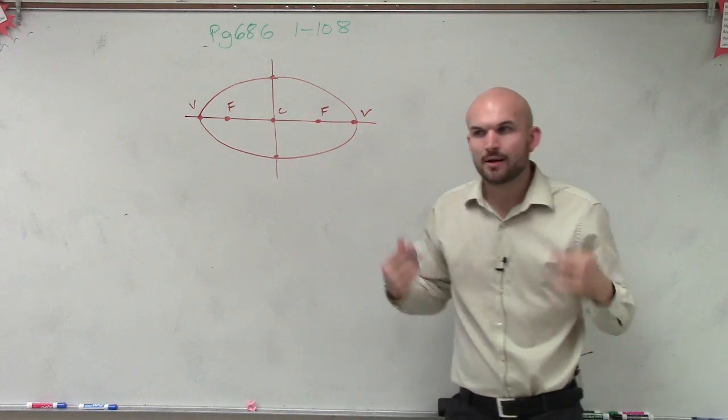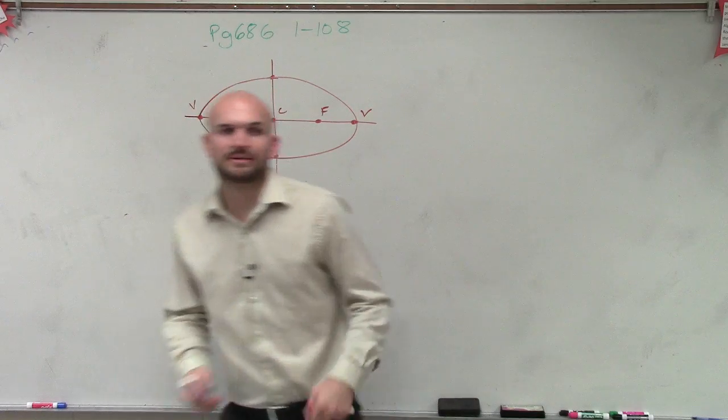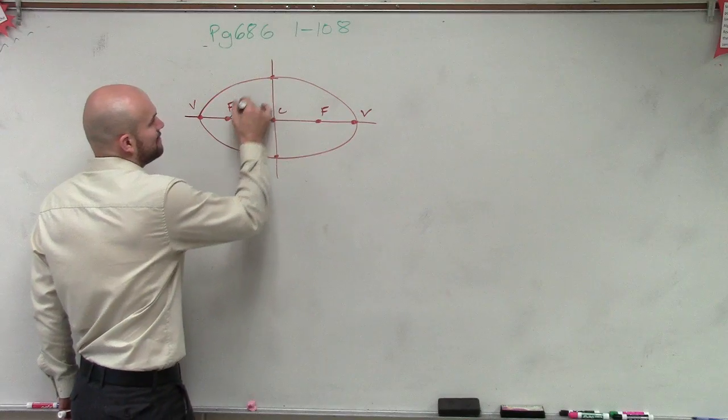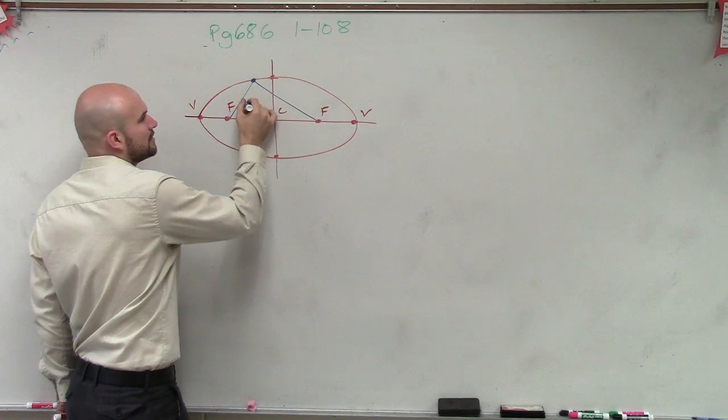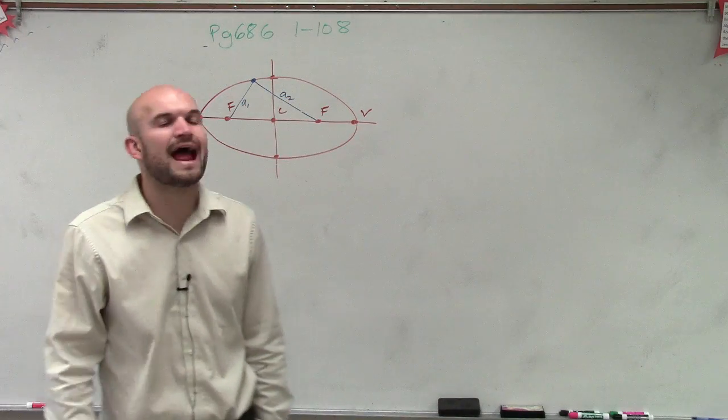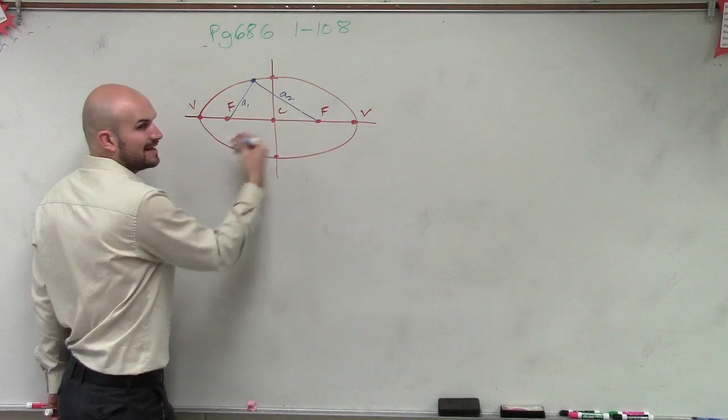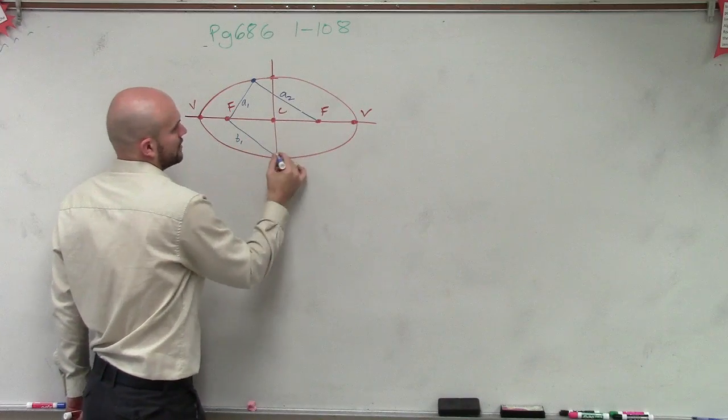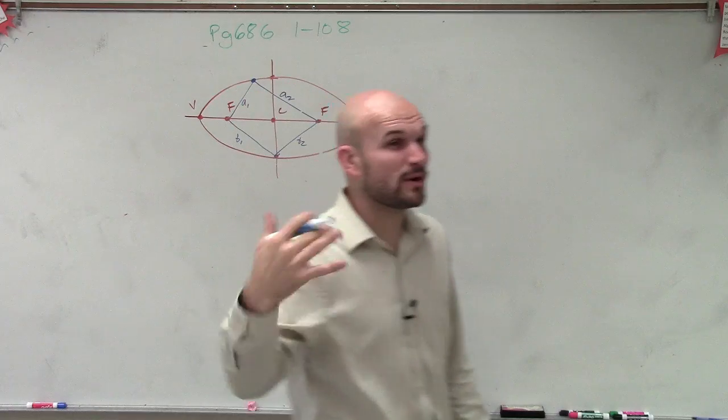But when we came through with the definition of an ellipse, what we talked about is for any point on this ellipse, the sum of our two lines are constant for wherever my point is. So a1 plus a2 is going to equal b1 plus b2.